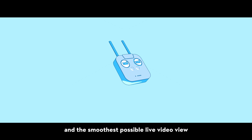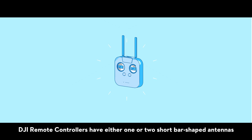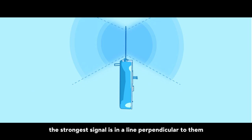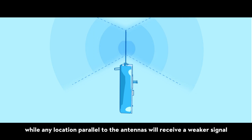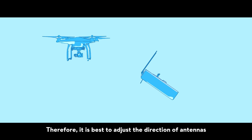DJI remote controllers have either one or two short bar-shaped antennas. When the antennas are positioned to point upwards, the strongest signal is in a line perpendicular to them, while any location parallel to the antennas will receive a weaker signal. Therefore, it is best to adjust the direction of antennas according to the position of the aircraft.